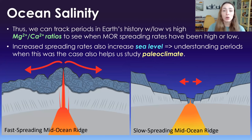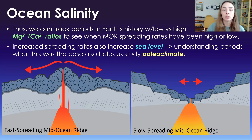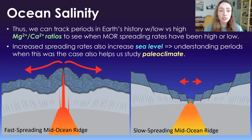Increased spreading rates also increased sea level, helping us reconstruct and understand paleoclimate better. If we're seeing transgression or sea level rise in the rock record, we can ask whether an increase in spreading rates caused this or something else. This is a really helpful tool for reconstructing certain aspects of Earth's history.